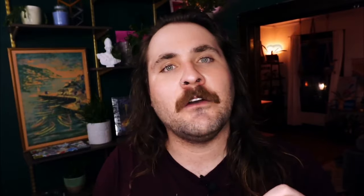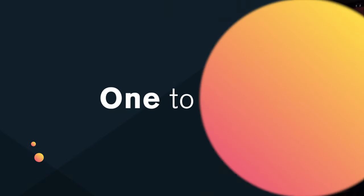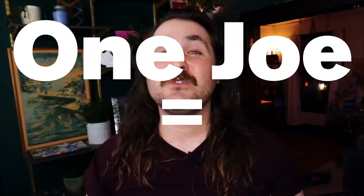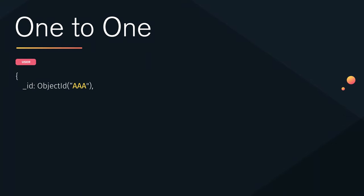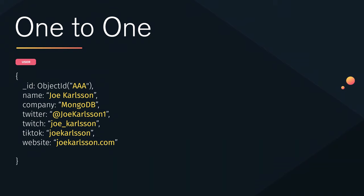The first one we're going to cover is one-to-one. One-to-one makes me think about going to Target — do you know how Target has those frozen meals for one? One Joe equals one meal for one. One-to-one relationships in schema design are very similar: one user has one name, one company, one Twitter handle, one Twitch handle, one TikTok, one website. One-to-one.